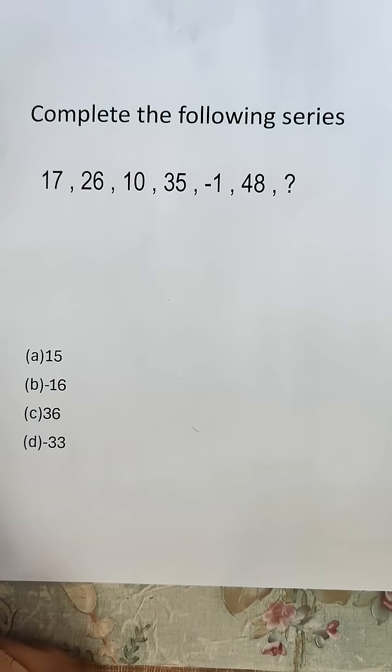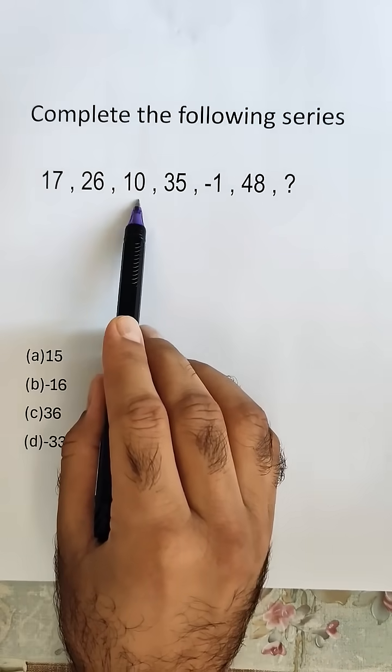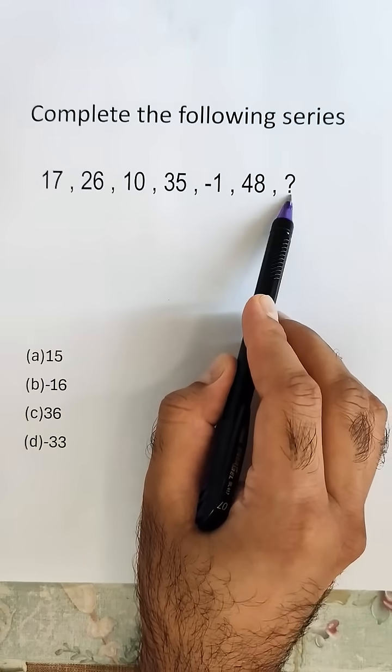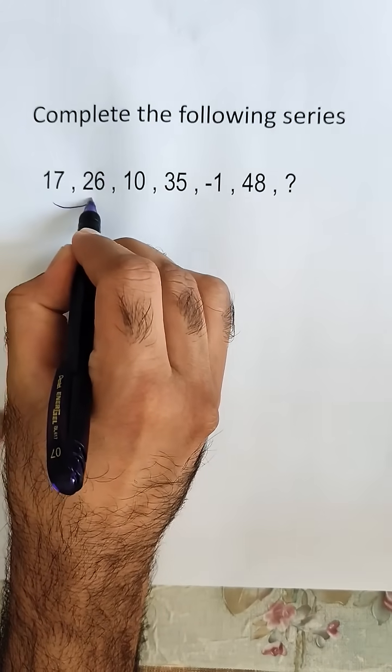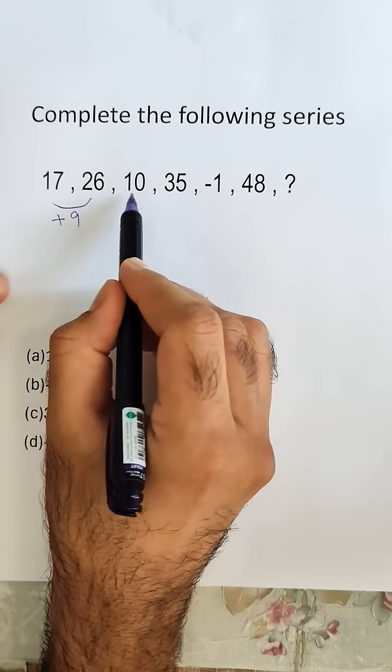Now this is a very beautiful question. We have to complete the series: 17, 26, 10, 35, -1, 48, and this is a missing number. So first of all, the difference between 26 and 17 is plus 9 here.